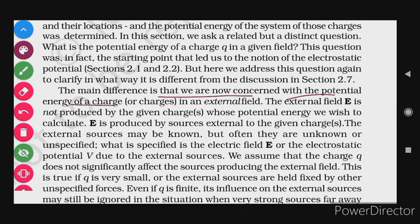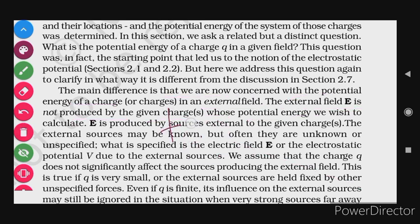The main difference is that we are now concerned with the potential energy of a charge in an external field. The external field is not produced by the given charge whose potential energy we wish to calculate. In our first and second videos, we discussed a source charge, so obviously there would be an electric field due to that charge — the source of the electric field was known in that case. We did work on a unit positive charge against this electric field, and the source was known.